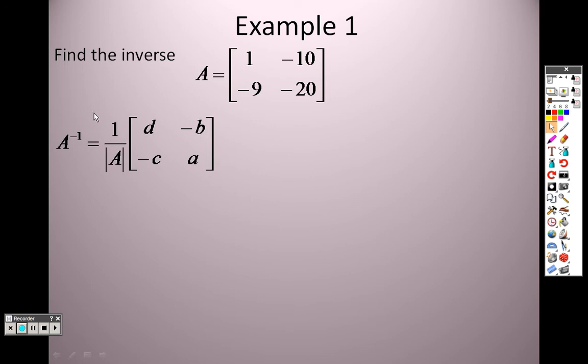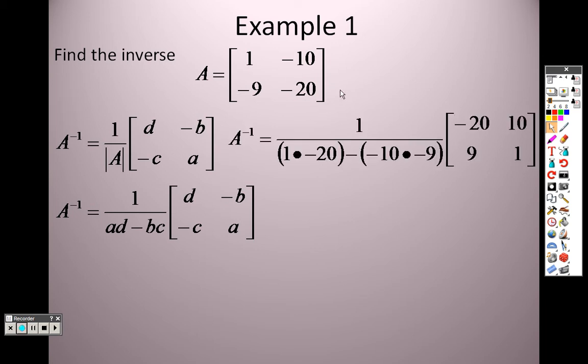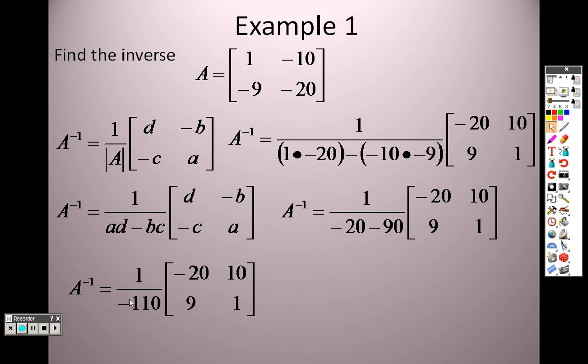So when we're doing this, I have to do 1 over the determinant of A, so that's basically like saying that times those 2 multiplied together minus those 2, and then I have to flip them around. 1 over 1 times negative 20 minus negative 9 times negative 10, and see how I swap these? This was 1 and negative 20, now it's negative 20 and 1. These were both negative, so I take the opposite of them, that's why they're both positive. On the bottom there, that's negative 20 and negative 90, so that's really like saying 1 over negative 110, and I have to multiply that now through to each item.